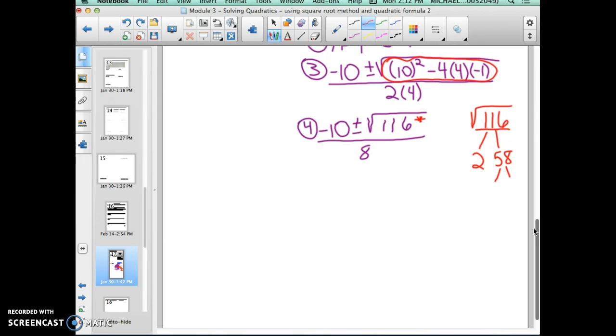58 still has factors that go into it. Again, 58 is even, so I can use 2 one more time. 58 divided by 2 is 29. Now, I have gotten to the prime factorization of 116. All of these numbers are prime factors.